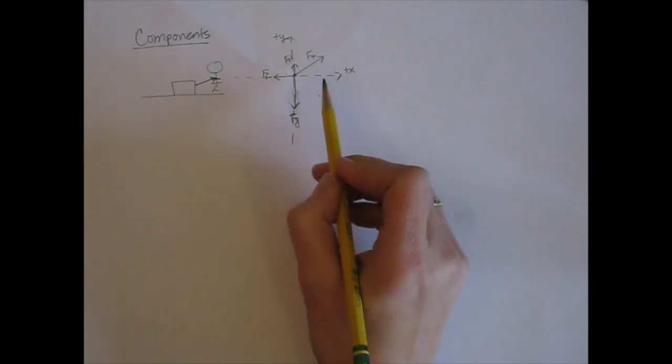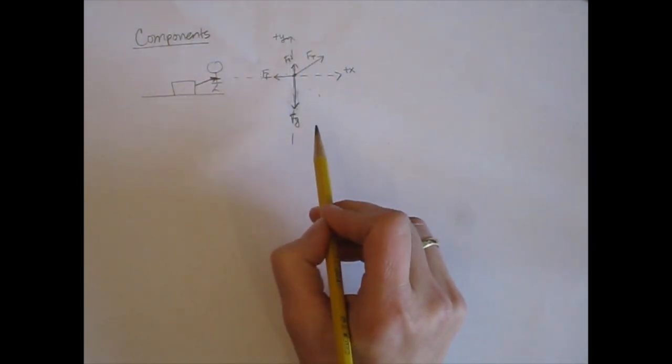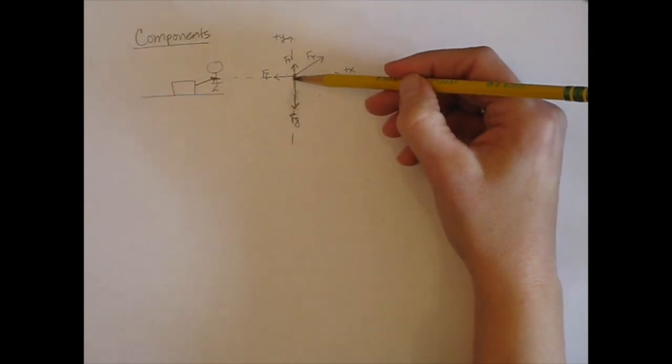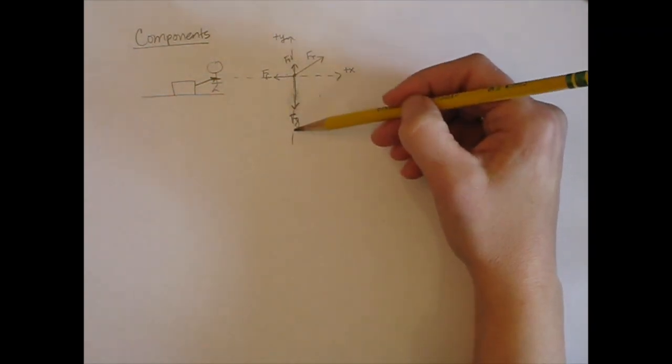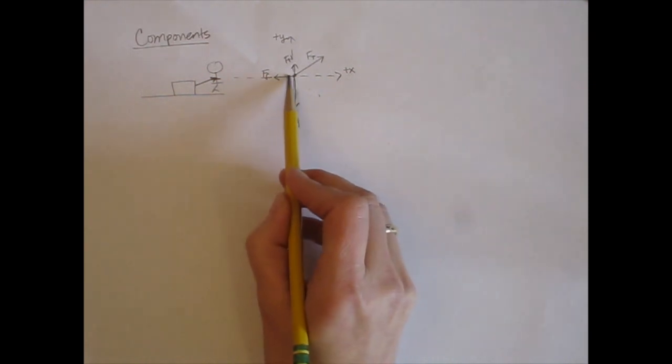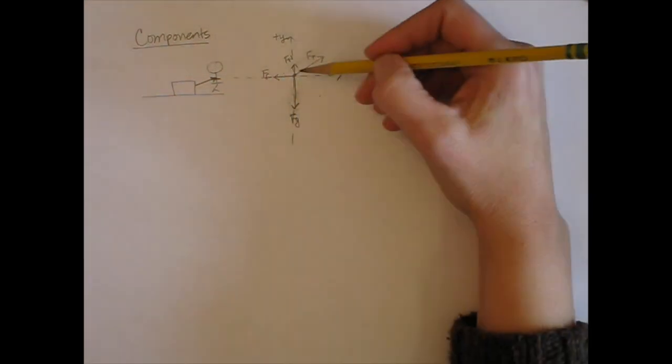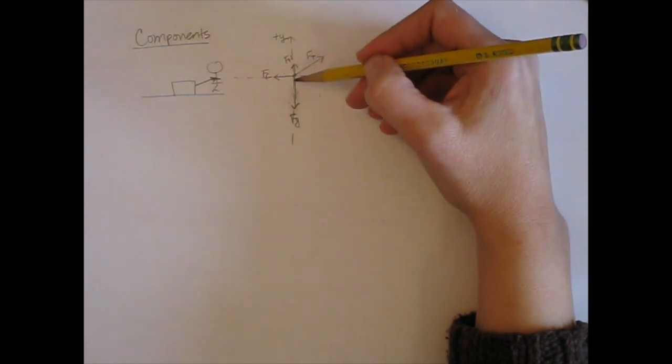The third step is to see if you have any forces that are not already aligned with one of the axes. So force of gravity is already aligned with the y axis. Force of friction is already aligned along the x axis. And normal force is already aligned along the y axis.